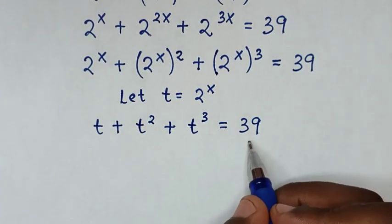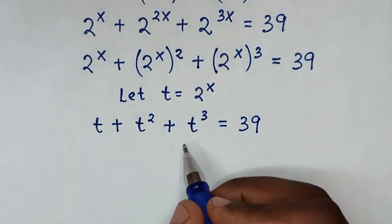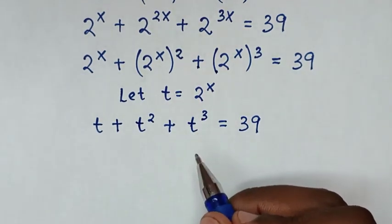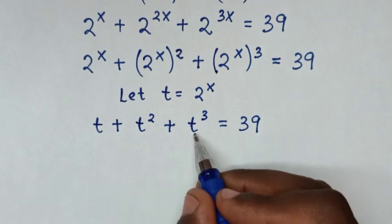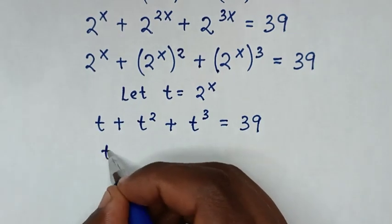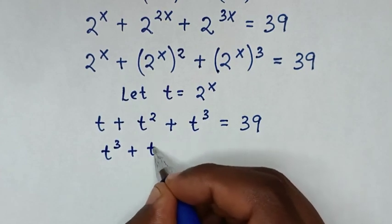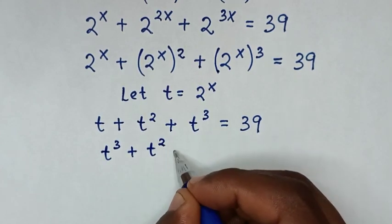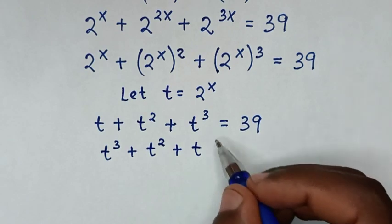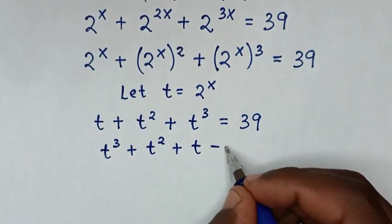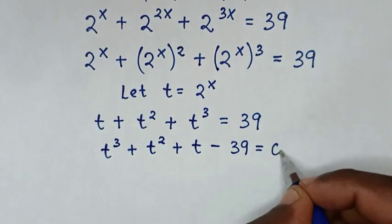We take 39 to the left side. Starting with the highest power: t^3 + t^2 + t − 39 = 0.